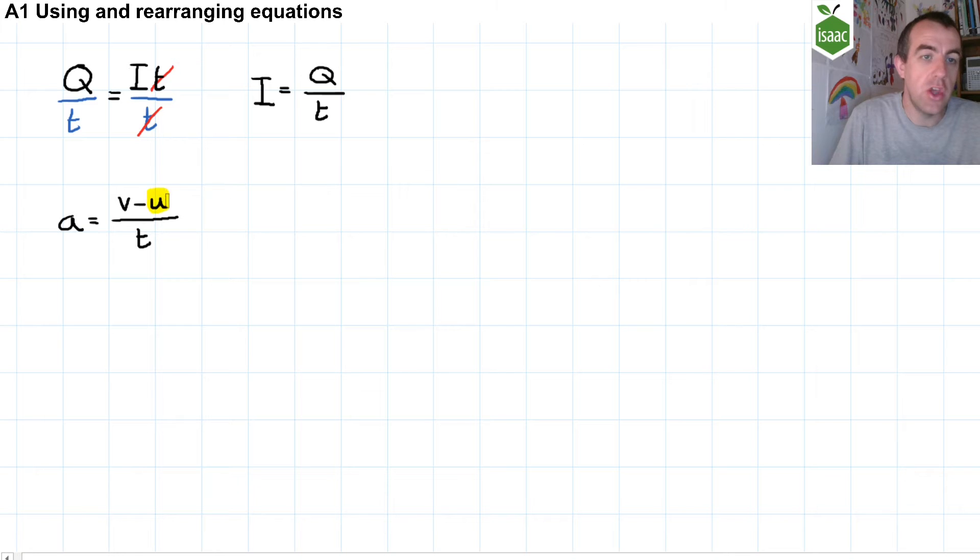If we wanted to make U the subject, then we would have to examine this equation to see what happens to U. First of all, U is being subtracted from V. Then V minus U is being divided by T. To get U as the subject, we have to work in reverse order, from outside to in.